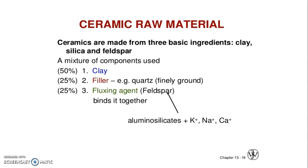These three components are mixed to make ceramic chromatidies in the composition of 50%, 25%, and another 25%. The 50% is clay, the 25% is silica in the form of quartz, which should be in finely ground form, and another 25% is a fluxing reagent, which is feldspar.